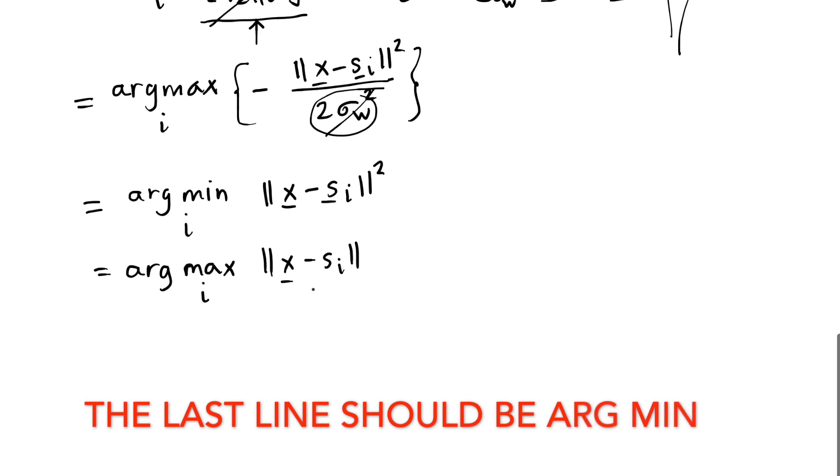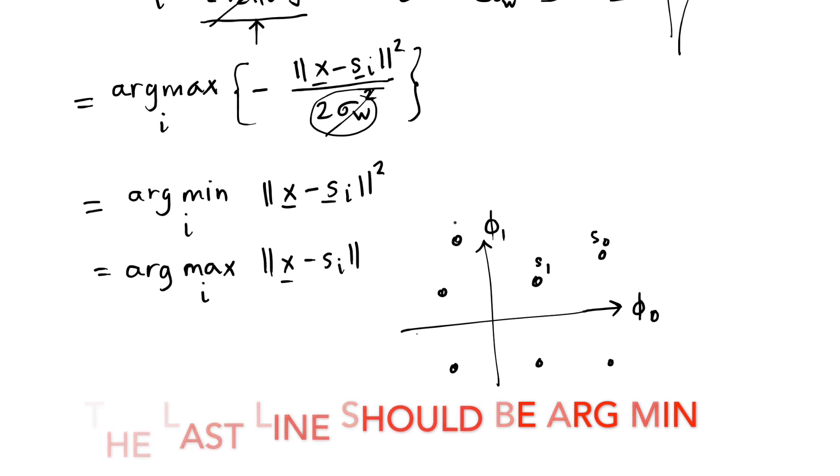That is, this distance, the distance between my measurement x and Si is what I need to think about. I need to find the symbol that's closest. What's going on here is I have a constellation diagram. Let's take phi 0 and phi 1 for a two-dimensional modulation, and I have symbol points, wherever they are labeled S0 through SM-1. I measure some vector x. And my job is now just to find the symbol that's closest. And we've talked about this in terms of QAM, in terms of PSK. Now I've shown you, based on the statistical properties of noise, why this becomes the optimal decision.